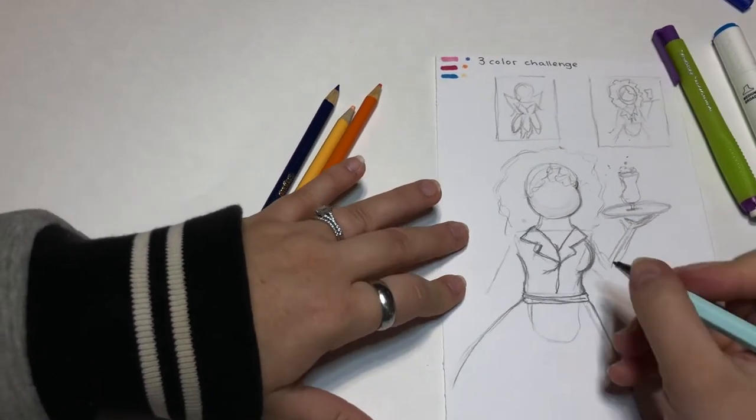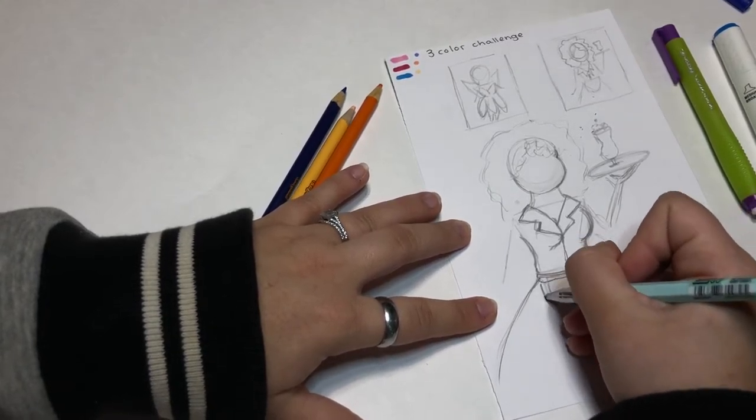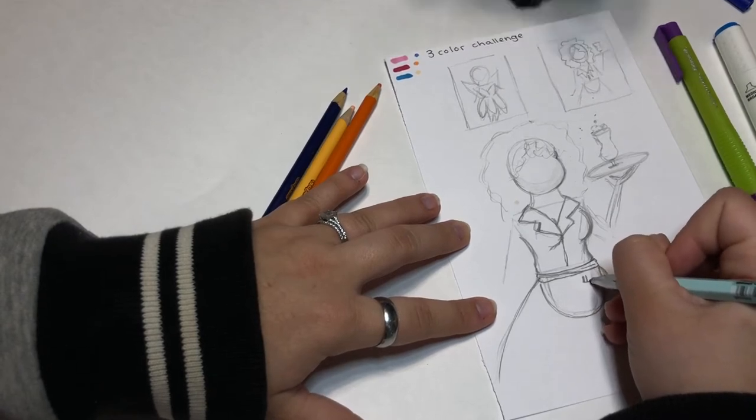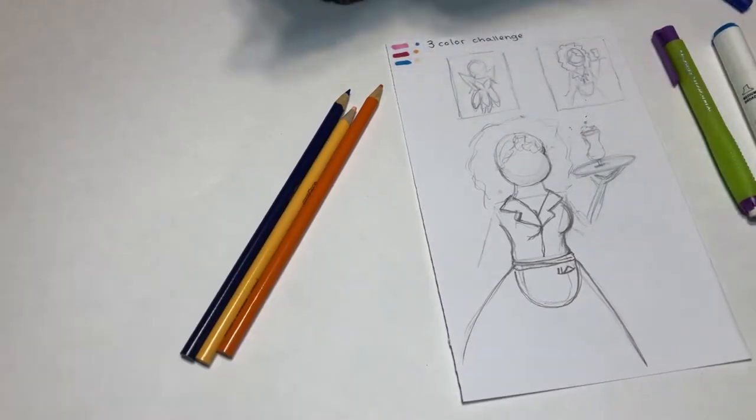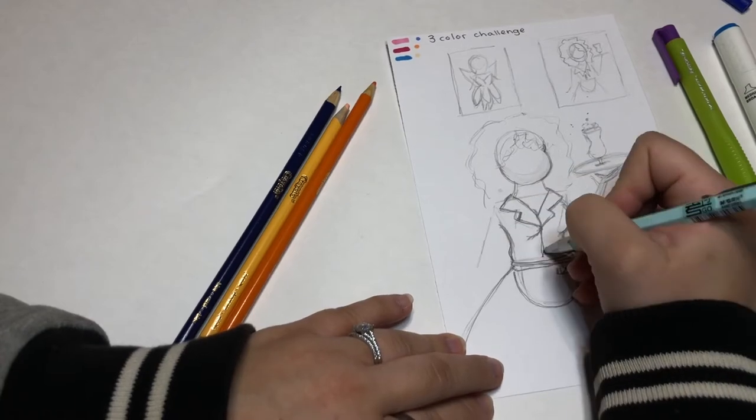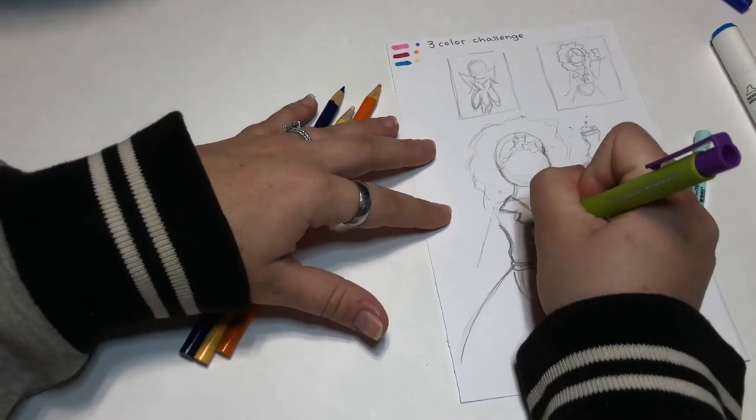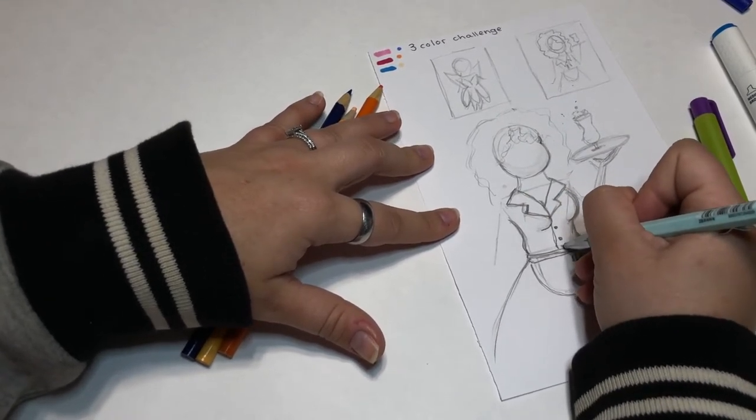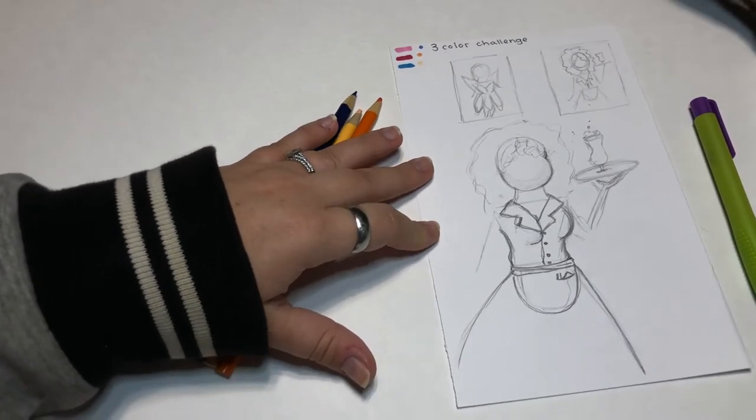This one I went for a typical just button-down shirt and gave her an apron, pens and her notepad. And then I gave her a skirt. And again, if you notice, I said this in my last video, I have just the simple little curves or squiggles where things would bunch up and I think it makes it a little more realistic.